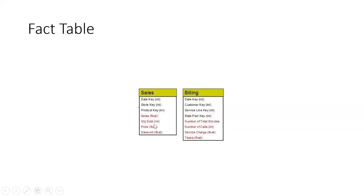To repeat once more: in the fact table, the highlighted columns are the original facts, and apart from those, the other columns can be the primary key or foreign keys of the same table. There are multiple foreign keys because we will be joining dimension tables using those keys. While joining fact and dimension tables we use data modeling concepts — that will be elaborated more in the next class. For today, just learn what a fact table is and what kind of data is stored inside it.